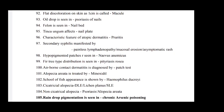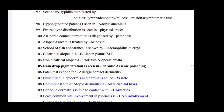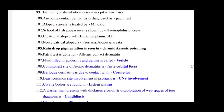Secondary syphilis is manifested by painless lymphadenopathy, mucosal erosion, and asymptomatic rash. Hypopigmented patches are seen in naevus anemicus. Fir tree type distribution is seen in pityriasis rosea. Airborne contact dermatitis is diagnosed by patch test. Alopecia areata is treated by minoxidil. School sore appearance is shown by Haemophilus ducreyi. Cicatricial alopecia is seen in DLE, lichen planus, and SLE. Non-scarring alopecia includes psoriasis and alopecia areata. Raindrop pigmentation is seen in chronic arsenic poisoning.